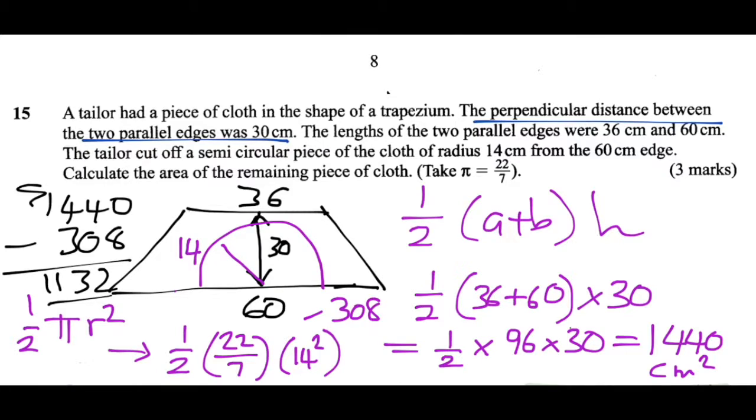So the answer to the question, what is the area of this remaining piece of cloth, is 1132 centimeters squared.